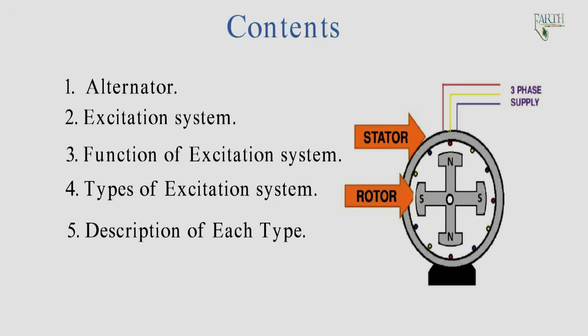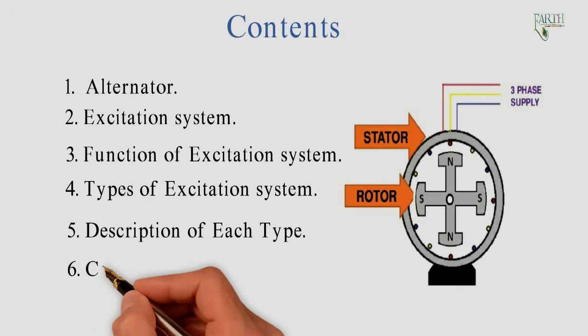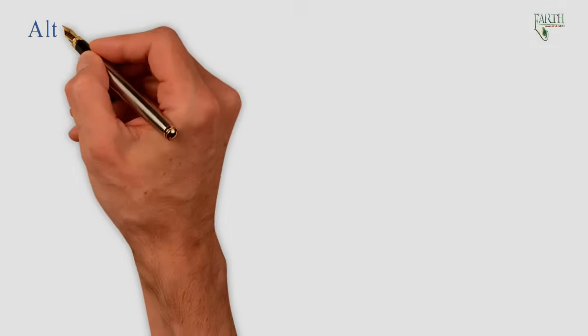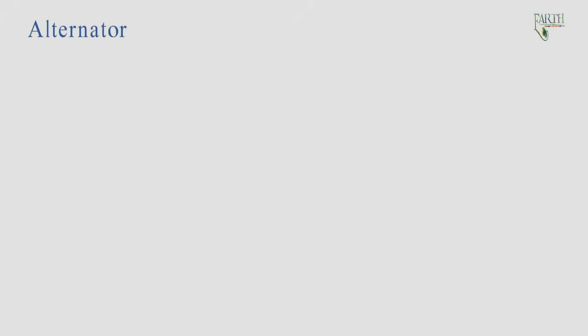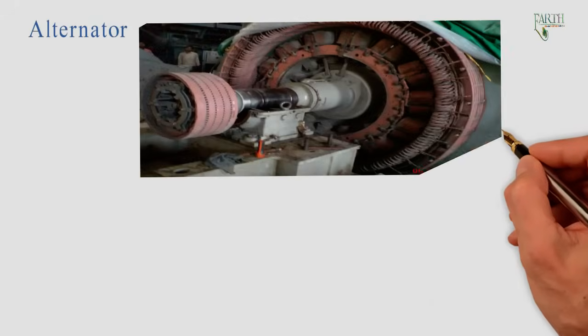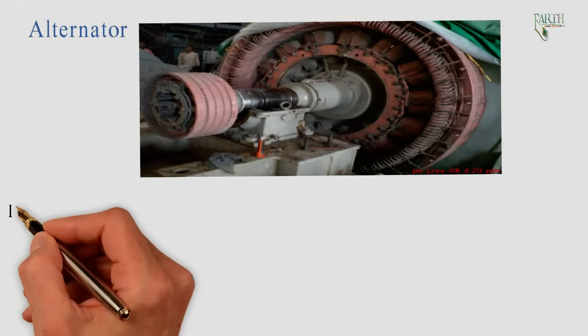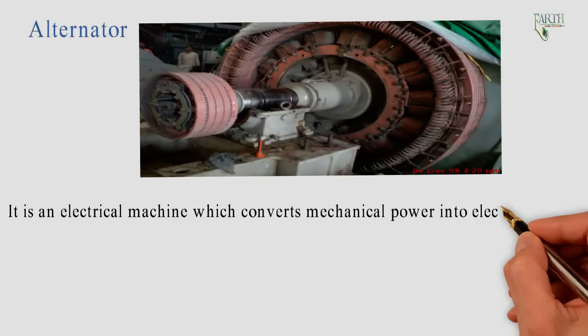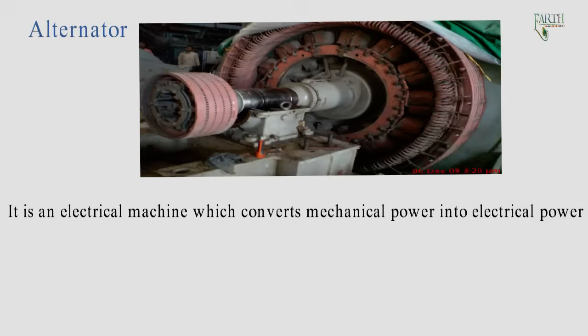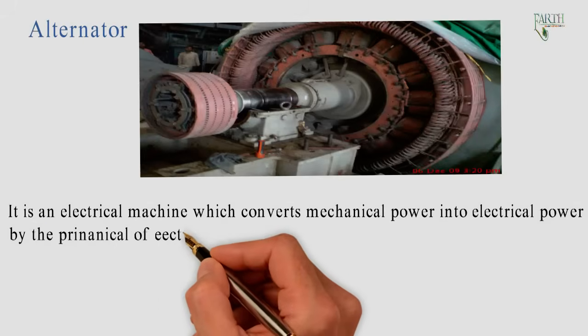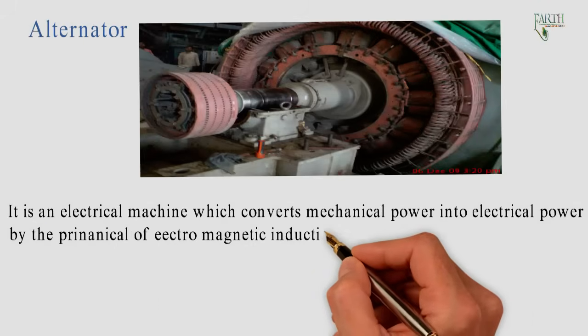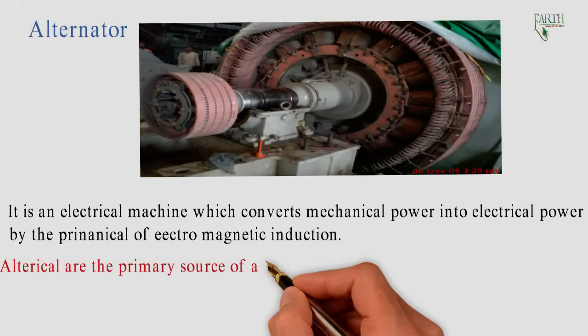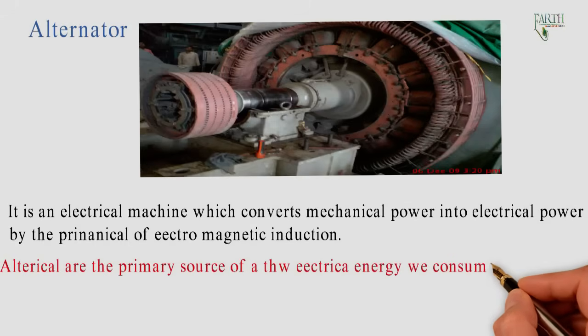5. Description of each type, 6. Conclusion. Alternator: It is an electrical machine which converts mechanical power into electrical power by the principle of electromagnetic induction. Alternators are the primary source of the electrical energy we consume and also the largest energy converters.